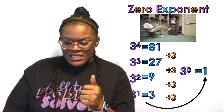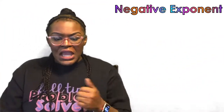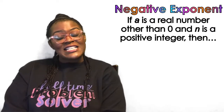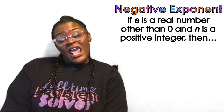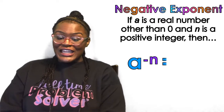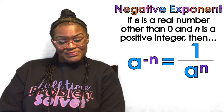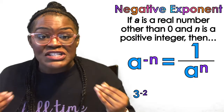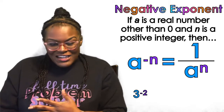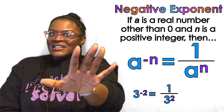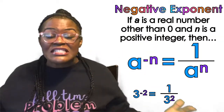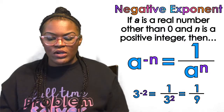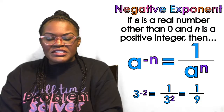So your teacher moves on to negative exponents and puts on the board: if a is a real number other than zero and n is a positive integer, then a to the negative n equals one over a to the n. Then she puts numbers on the board — three to the negative two equals one over three to the positive two, which equals one over nine — like that's supposed to make sense to you right away.